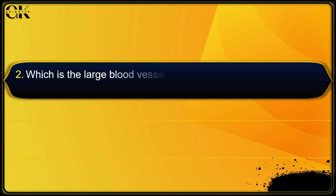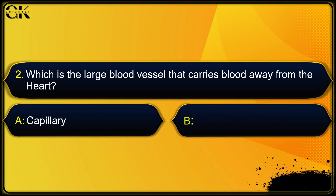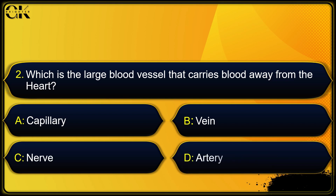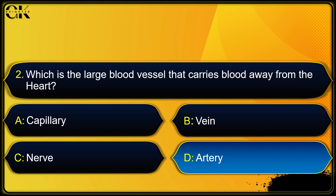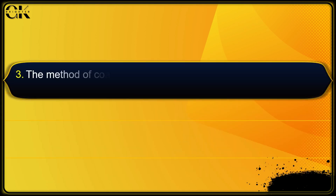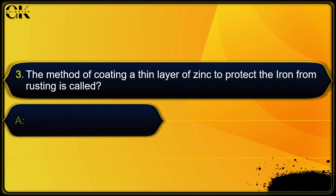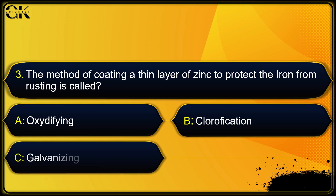Which is the large blood vessel that carries blood away from the heart? Options: capillary, vein, nerve, or artery. The answer is artery.